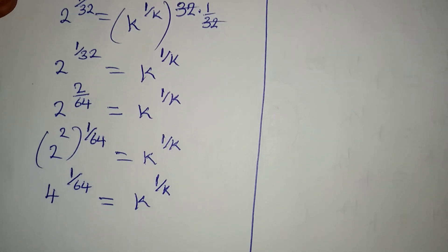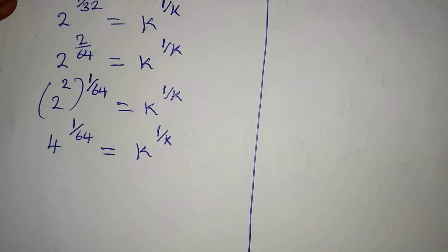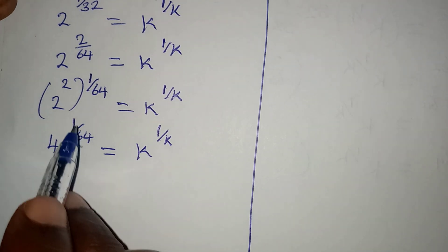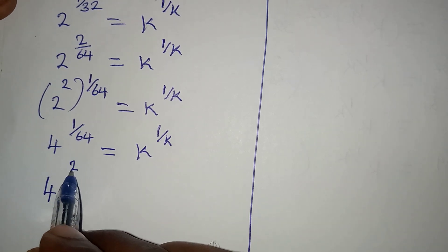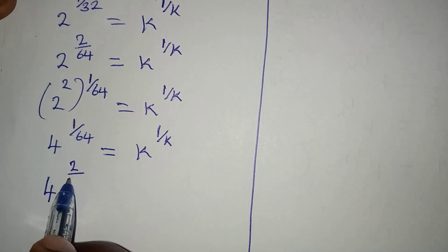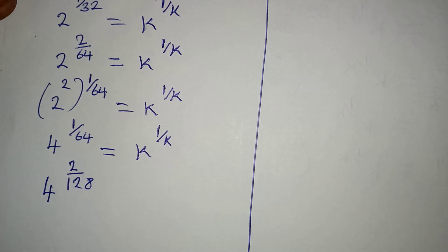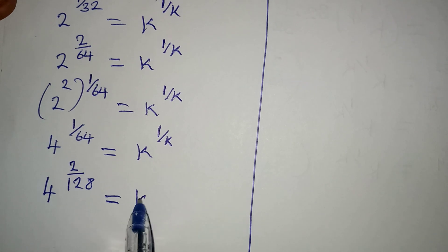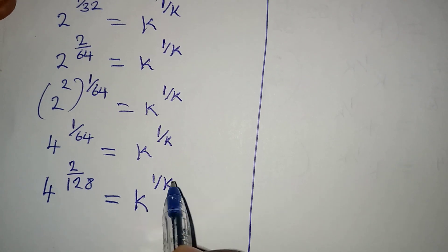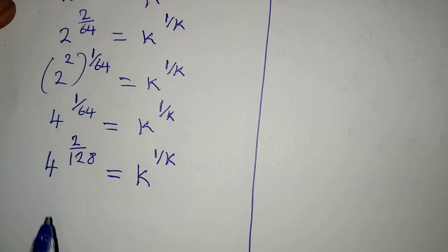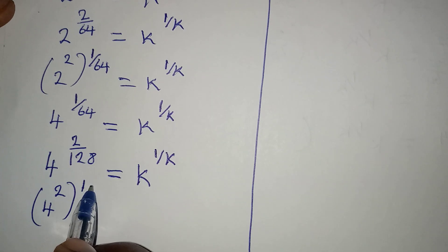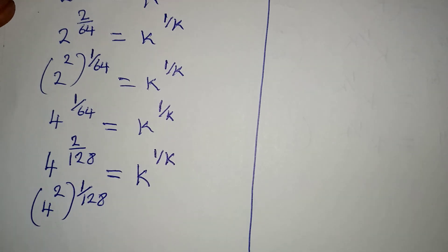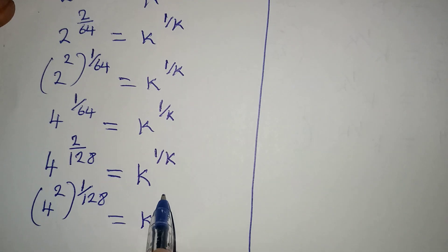At this moment it is still not making sense, so I have to take it a step further. Get another equivalent fraction: 4 to the power of 2 over 128 — because 64 times 2 gives us 128. So this is another fraction equivalent to 1 over 64, and this is definitely equal to k to the power of 1 over k. Like I did before, this is still the same as 4 squared to the power of 1 over 128, which gives us k to the power of 1 over k.